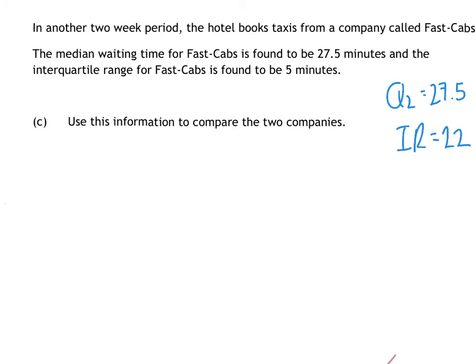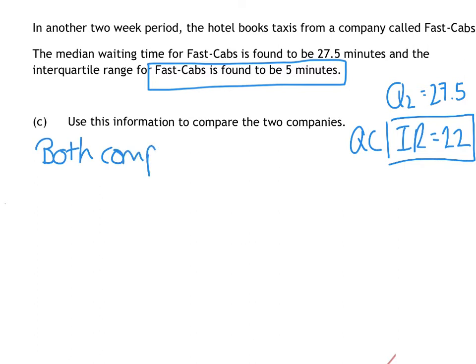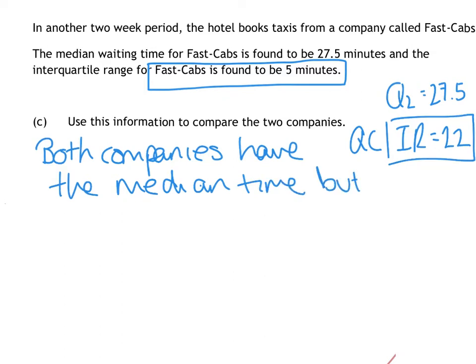But one has an interquartile range of 5 and one has an interquartile range of 22. So Fast Cabs, their interquartile range is only 5 minutes compared to Quick Cabs, which was 22. So that's a real thing with comparison. It says use this information to compare the two companies. So I would first comment on the fact that both have the same median. So my statement would say, both companies have the same median waiting time.